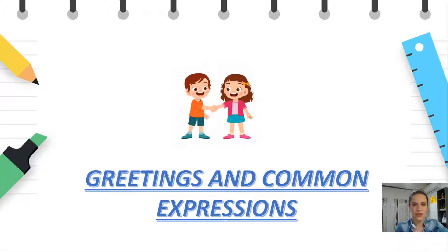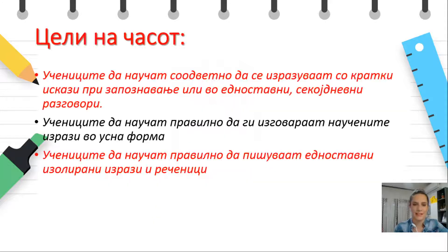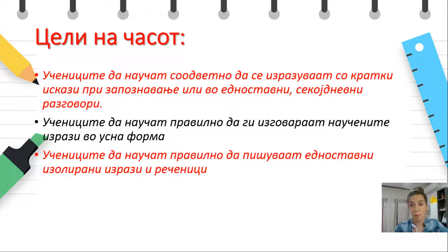These are two children who are meeting each other right now. Today, the most important goal of this lesson is to learn how to express yourself with short phrases when you meet someone or in any everyday situation, to pronounce the expressions correctly, and to write them correctly. You have to get ready and take out your notebooks, your pencil or your pen.